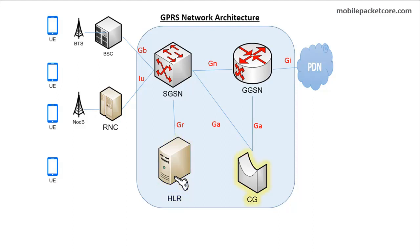The CG refers to Charging Gateway. It collects charging records from the SGSN and the GGSN. Those charging records are named the CDRs, which refers to Call Detail Records. The CG uses those CDRs in order to charge the user depending on his usage.